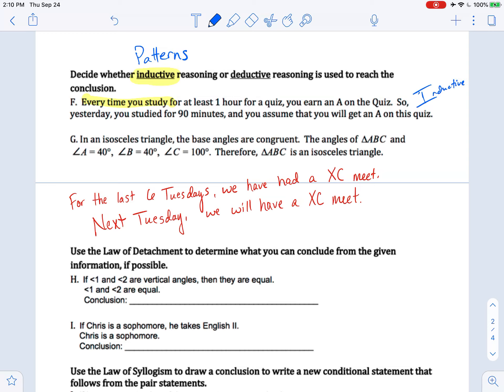If I pass geometry, I won't have to go to summer school. If I don't go to summer school, then I'll get a job. If I get a job, then I'll make money. So I can conclude, I can jump to the conclusion that if I pass geometry, then I'll make money.